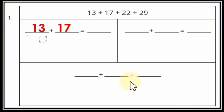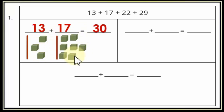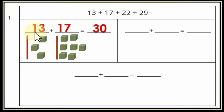13 plus 17: في عندي 1 in tens و3 in ones في الـ13. والـ17: 1 in tens و7 ones. هنجمع الـones: 3+7 = 10 ones = 1 ten. هزود الـ1 ten على الـ1 ten اللي موجودة في الـ13 يبقى 2 tens. So the sum of 13 and 17 is 30.